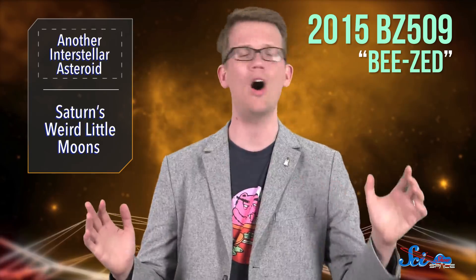Except, instead of just visiting our solar system, this one permanently moved in. The object is named 2015 BZ-509, or BZ for short, and it orbits the Sun in a pretty wonky orbit.